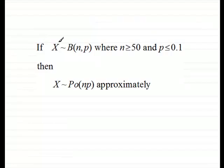If X is distributed binomially, B(n,p), where n is greater than or equal to 50 and p is less than or equal to 0.1, then X is distributed as a Poisson distribution with parameter or mean np. And that distribution is approximate.